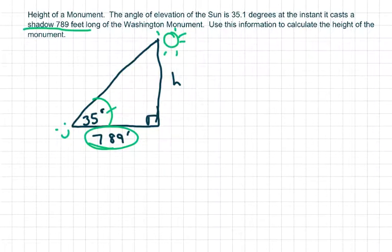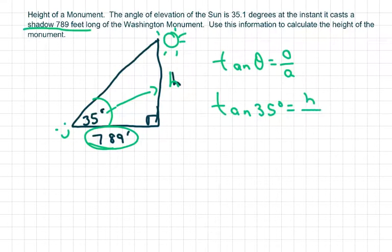So we're going to calculate the height. So we have actually opposite over adjacent, which is your tan function, opposite over adjacent. So we have tan of 35 degrees equals height over 789 feet.